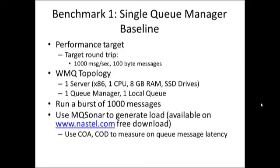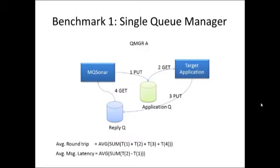You're welcome to go there and get your copy and run it in your environment as well. As part of the process, we're going to run confirm-on-delivery and confirm-on-arrival report messages in order to measure how quickly applications are actually dequeuing messages off the queue and to measure message latency on the queue itself. The topology for the first benchmark is a single queue manager: MQ Sonar puts a message on the target application queue, the application receives that message and responds back immediately to the reply queue, and MQ Sonar then receives that response. The concept is to measure average round trip — an average of the sum of each individual step from step 1 through step 4.